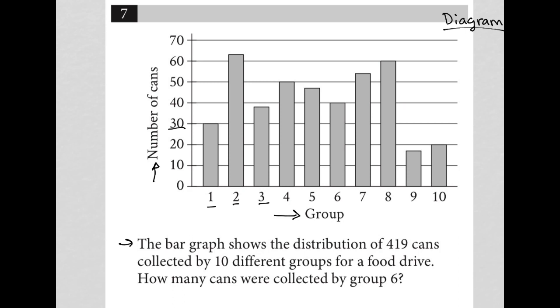So our focus is here on group six. We go up its bar. It stops here, which corresponds to 40. So group six must have collected 40 cans. Our answer here is 40.